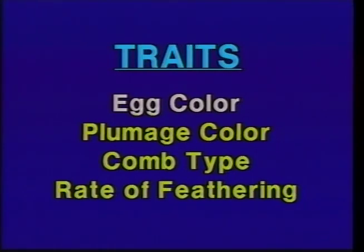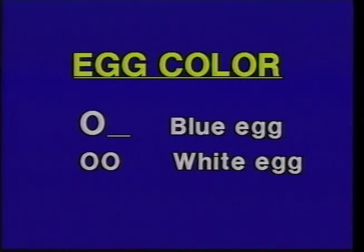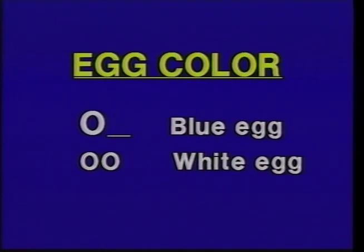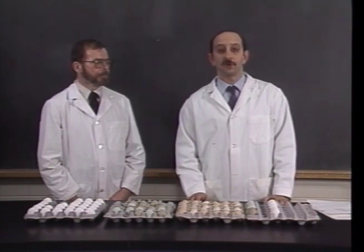The first example deals with blue and white eggs. The inheritance pattern is rather simple: blue is dominant to white. An animal that is either homozygous or heterozygous for the blue allele will produce blue eggs. White is recessive to blue, so a hen must be homozygous for the white allele to produce white eggs. Let's take a look at some of these eggs to get a feel for the different colors.